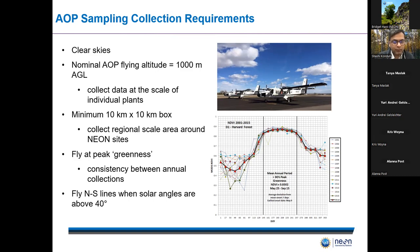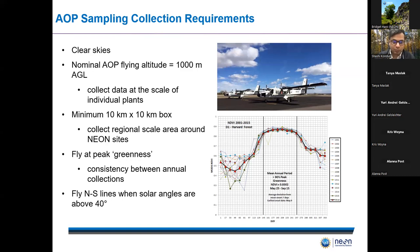We fly at 1,000 meters above ground level and typically cover at least a 10 by 10 kilometer box, though we often go above that for every NEON site. Flights are conducted at each site at peak greenness conditions. For every site we collect EVI trajectories derived from MODIS and draw a time interval corresponding to peak greenness, ensuring consistency between annual collections so that year-to-year comparisons are easier. We typically fly these lines in a north-south direction to reduce any BRDF effects.